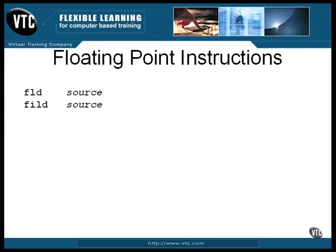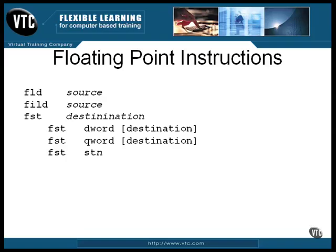You can also go the opposite direction. This instruction copies a value from the ST0 register into the destination. The destination can be specified as a double word for a 32-bit floating point number, or a quad word for a 64-bit floating point number, or it can be specified to be one of the other floating point registers, numbers 1 through 7.